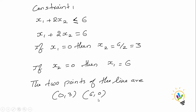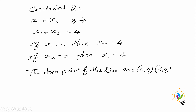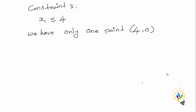For constraint 2, x1 + x2 ≥ 4, removing the inequality gives x1 + x2 = 4. If x1 = 0, then x2 = 4; if x2 = 0, then x1 = 4. So the two points are (0, 4) and (4, 0). For constraint 3, x1 ≤ 4, since it involves only x1, we have the single point (4, 0), giving a vertical line.